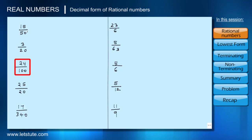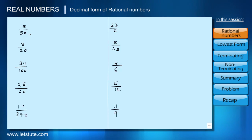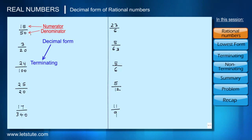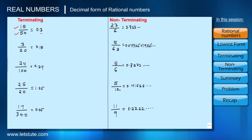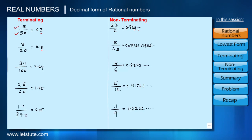Now, looking at a set of fractions, can you tell which have terminating decimal forms and which are non-terminating? Normally, you would divide the numerator by the denominator and check. On dividing, the first five fractions are terminating and the next five are non-terminating or repeating. For example, 23/6 has digit 3 repeating, and 5/63 has digits 079365 repeating.